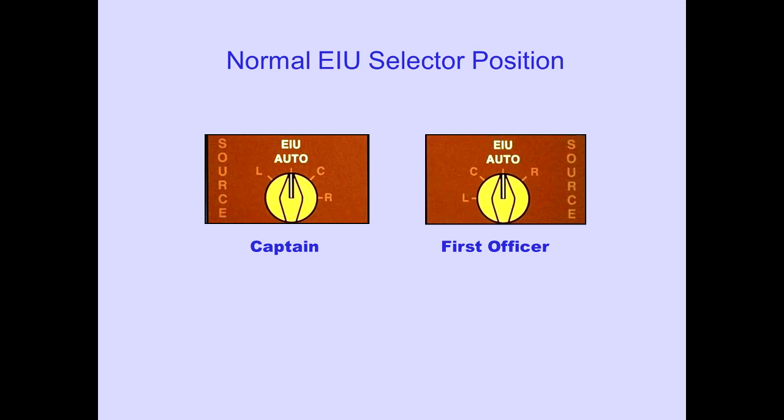Normally, the Captain's and First Officer's EIU source selector is in the auto position. The Captain's PFD and ND receive information from the left EIU, and the First Officer's ND and PFD receive information from the right EIU.